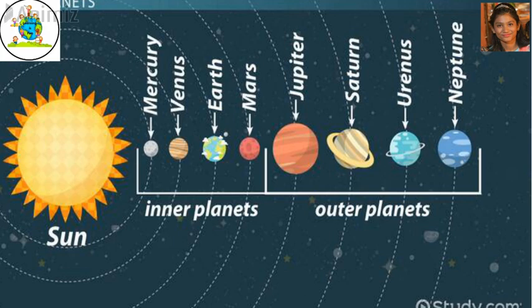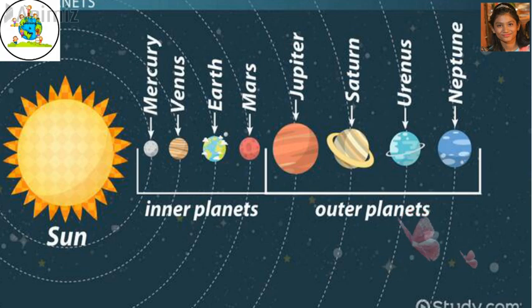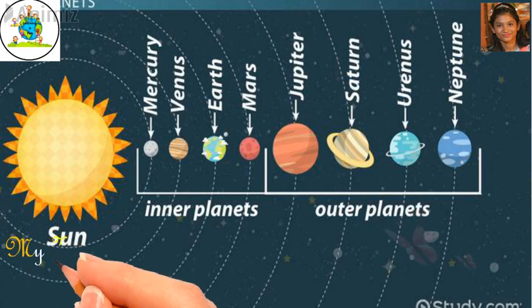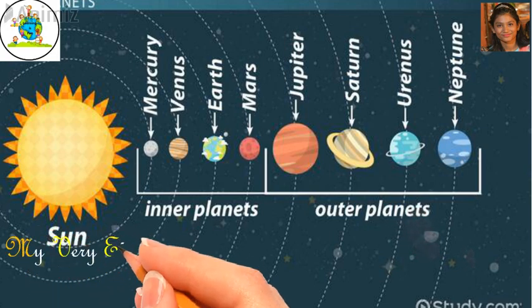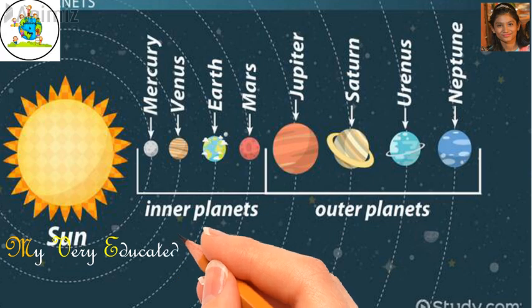Here, Mercury, Venus, Earth and Mars are the inner planets of the solar system. On the other hand, Jupiter, Saturn, Uranus and Neptune are the outer planets of the solar system.